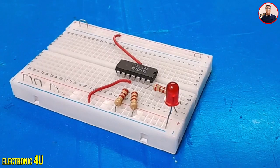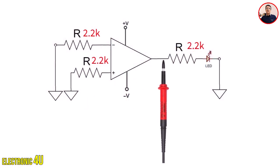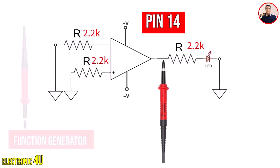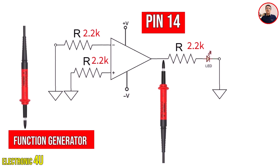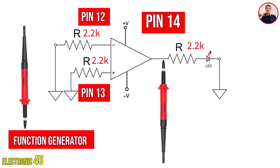Now we want to start the experiment. We connect the first oscilloscope probe to the op-amp output at pin number 14 to see its waveform. We also connect the second oscilloscope probe to the output of the function generator — a device that can generate various signals such as square waveforms, sine waves, and more. We will connect the function generator's output first to pin number 12 and then to pin number 13, and observe the results on the oscilloscope.